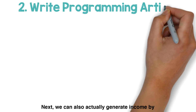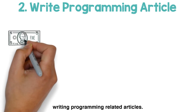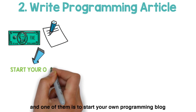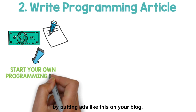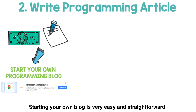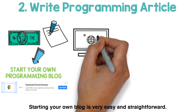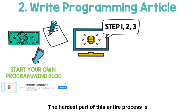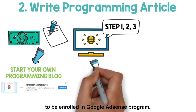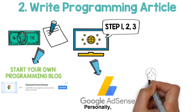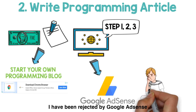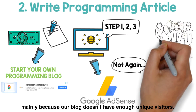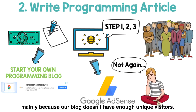Next, we can also generate income by writing programming-related articles. One way to do this is to start your own programming blog and later monetize it by putting ads on your blog. Starting your own blog is very easy and straightforward, and you can find tons of tutorials online on how to set one up. The hardest part of this entire process is to be enrolled in the Google AdSense program. Personally, I have been rejected by Google AdSense more than 40 times, and we still couldn't put ads on our blog mainly because it doesn't have enough unique visitors.